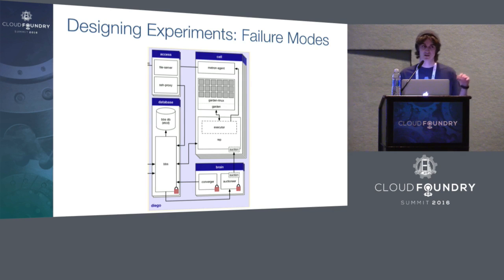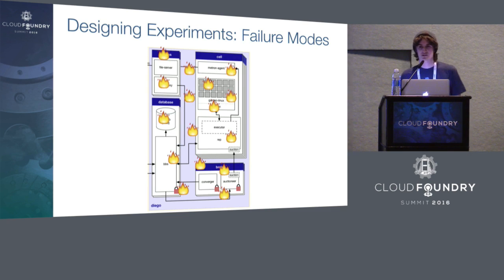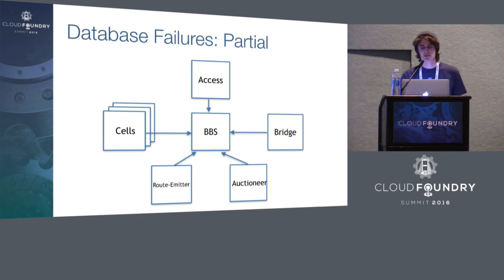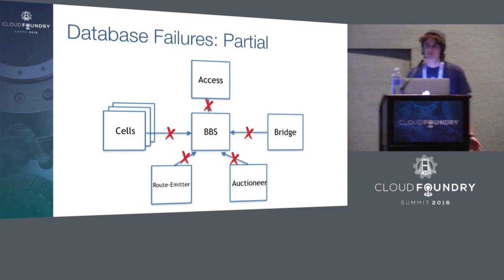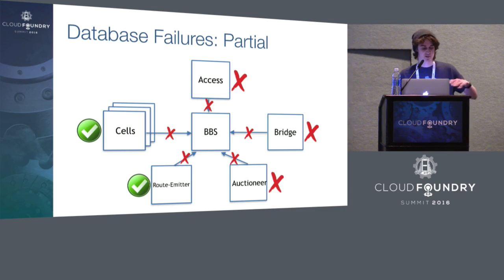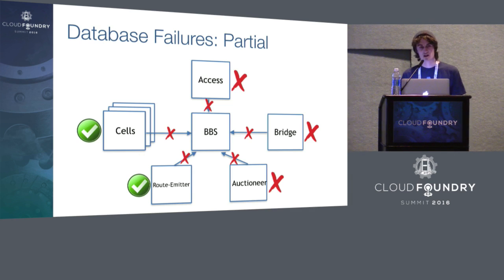Since we had Diego running in the happy path, we also wanted to test failure scenarios on this saturated environment. The first failure mode we investigated was partial failure of the database — interpreted as a loss of connectivity — simulated by stopping the Consul agents on all database VMs, making them unreachable from internal Diego services. After doing so, all currently running applications continued to stay running and were routable. This was entirely intentional and is one of Diego's design principles: running workloads are the top priority. We weren't able to desire new work as expected, but once connectivity was restored by restarting the Consul agent, the system returned to a stable state.